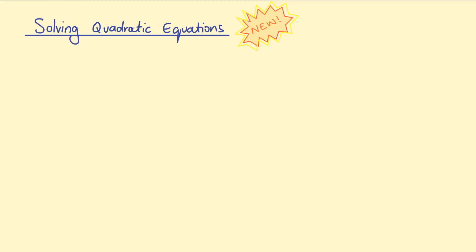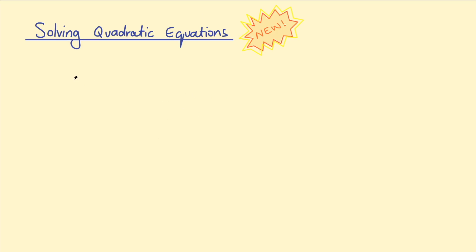Let's have a look at a few examples and get the idea of how this works. Starting with h² + 4h - 12 = 0. To start the new method we write down what we'd typically call the sum. We take the negative of the coefficient of h. I'm not going to explain the reasoning behind this method because Dr. Po-Shen Loh did a great job of that in his video — I'll link that in the description.